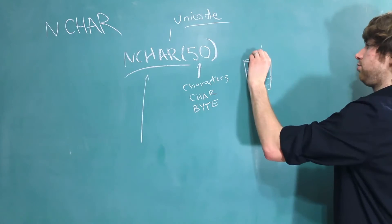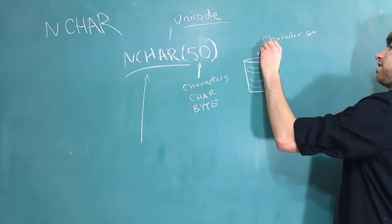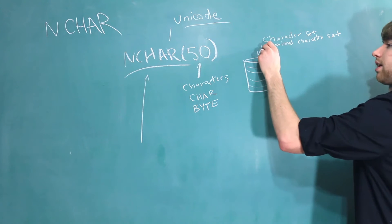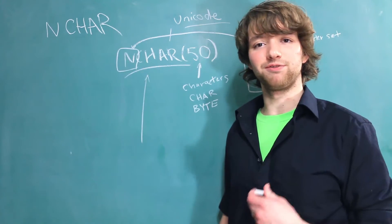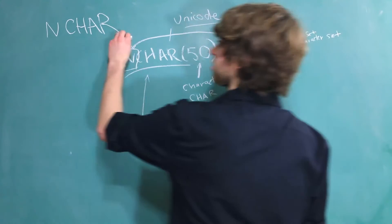So when you declare a database you give it a character set and what's known as a national character set. The national character set defines what character set all of the n data types use. But fortunately for me as the teacher there's only two options and those options are...